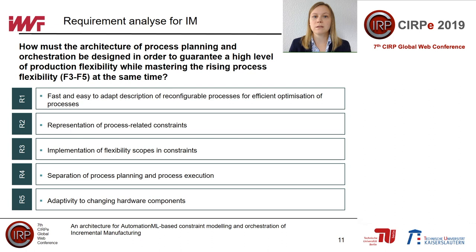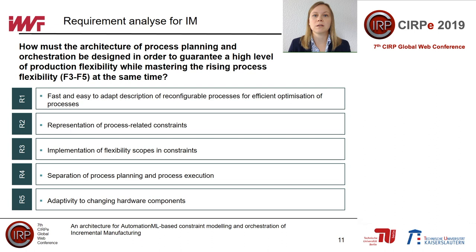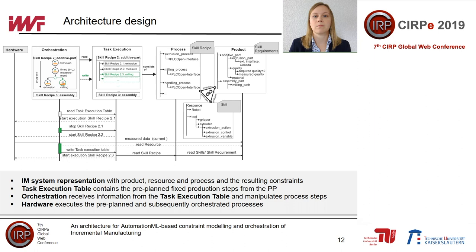A separation of process planning and process execution is important because the current state of the production system is only easily available at the orchestration level. The fifth requirement is adaptivity to changing hardware components — once processes have been described, it must be possible to carry out those processes with changed hardware. Only in this way can machine flexibility be guaranteed.